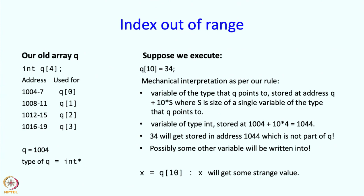Now the other way is also bad. If I write x equals q of 10, what will happen? It will pick up the value from this address 1044 and so x will get some strange value, who knows what value it gets. So again, it is a bad idea to have an address which is out of range. And now you see what C++ will do in such cases.